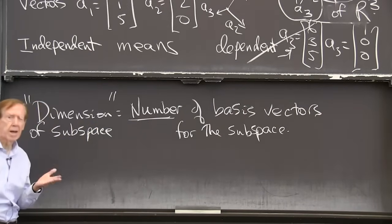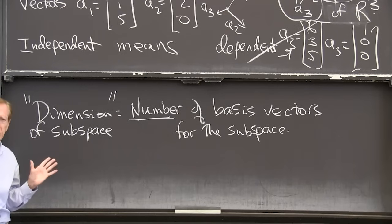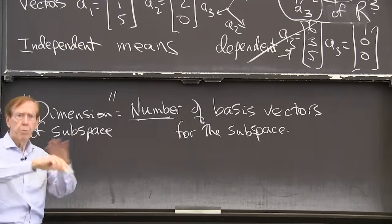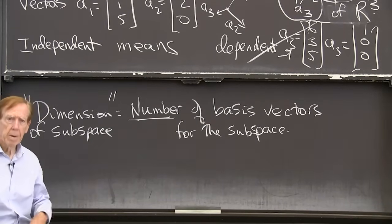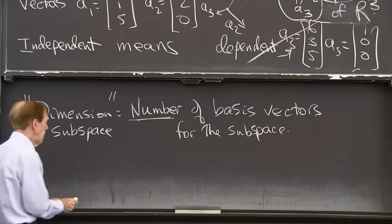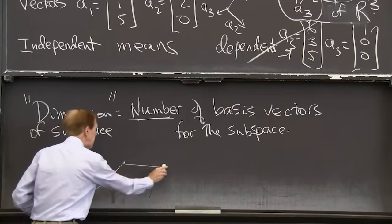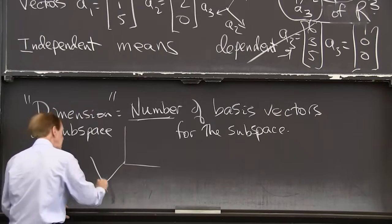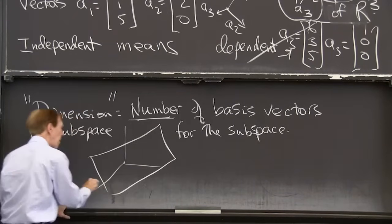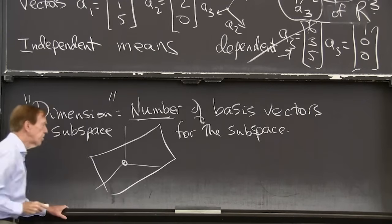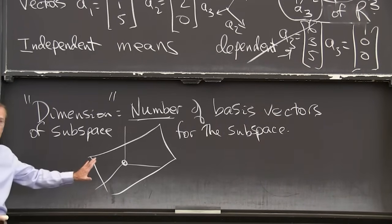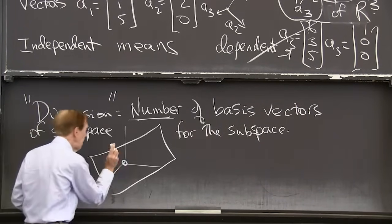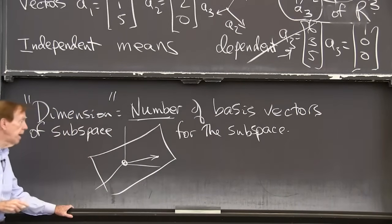All right, let's just take an example, just with a picture. I'll stay in three dimensional space. But my subspace will just be a plane. So here I'm in three dimensional space. Good. Now I have my subspace is a plane. So it goes through the origin. But it's only a plane. So I'm expecting that I could take a vector in the plane.